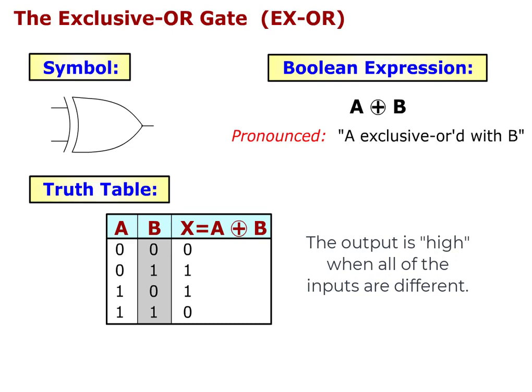This symbol, Boolean expression A EXCLUSIVE ORed with B, and truth table represent the EXCLUSIVE OR gate, also referred to as the XOR gate. This truth table shows the output is HIGH when ALL of the inputs are different.